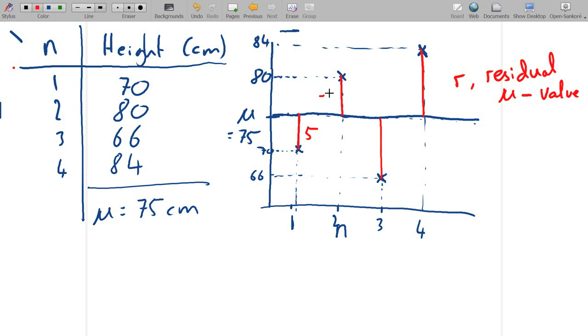For the third sample we have a measurement of 66 and a mean of 75, so the residual is 9. And likewise for measurement number 4, we have a measurement of 84 and a mean of 75, so the residual is minus 9.